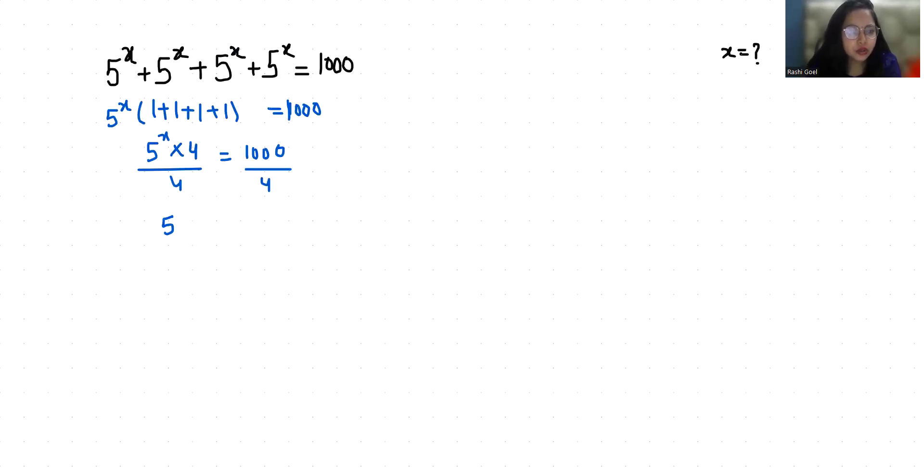So 5^x equals 250. I can write it as 5 times 5 times 5 times 2, that is 5^x equals 5^3 times 2. Now 5^x divided by 5^3 equals 2.